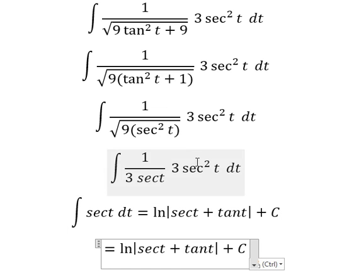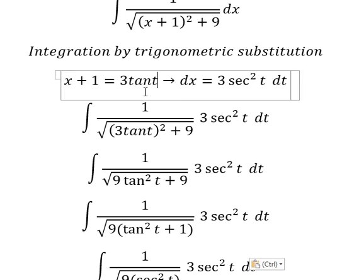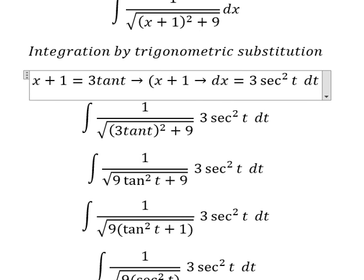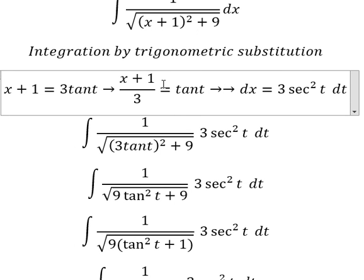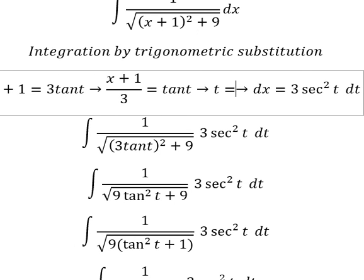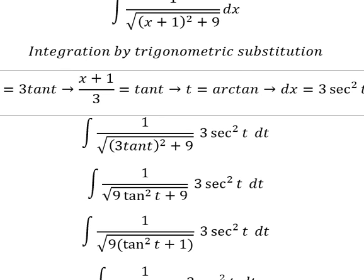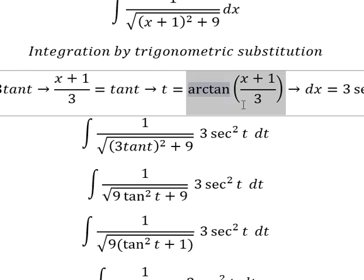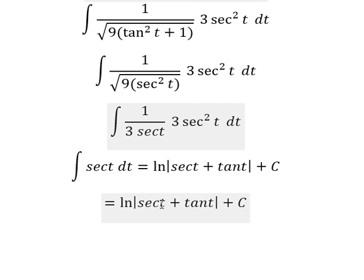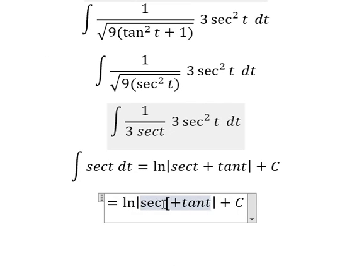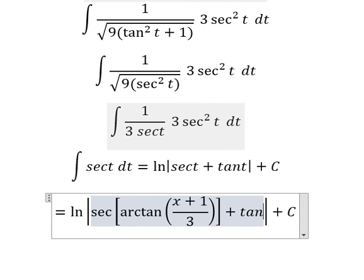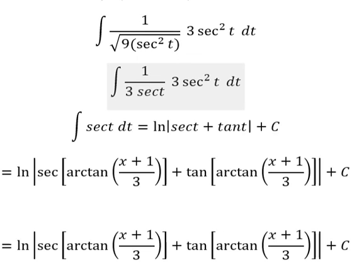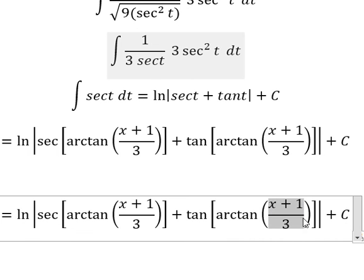For t, we need to divide both sides by 3. So we have t equal to arctan of (x+1)/3. I will substitute this to change for t. Then tan with arctan simplifies.